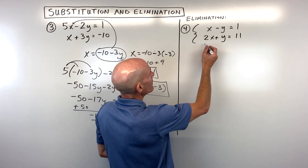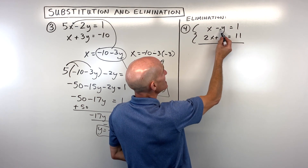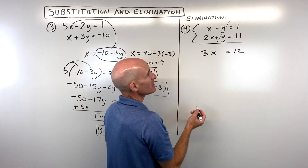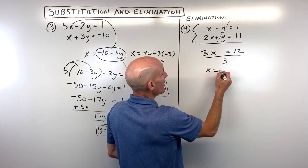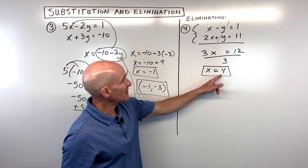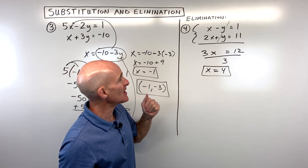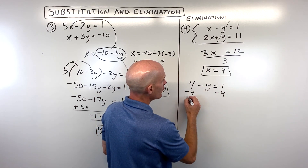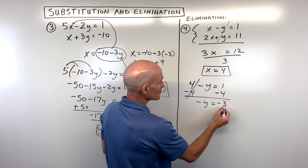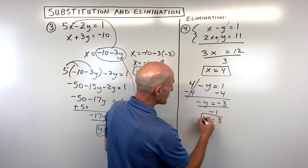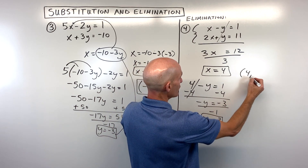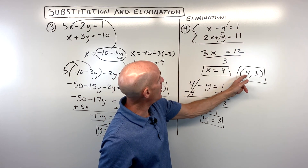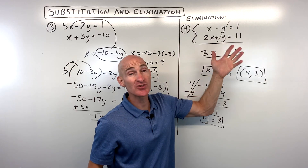In this example, we can just add the two equations together because we have negative 1y and positive 1y — the y's will cancel, and we just get 3x equals 12. Divide both sides by 3, and x equals 4. To solve for y, plug x back into the top equation: 4 minus y equals 1. Subtract 4 from both sides, divide both sides by negative 1, and y comes out to positive 3. Final answer: (4, 3). Check: 4 minus 3 equals 1; 2 times 4 plus 3 equals 11. Correct.